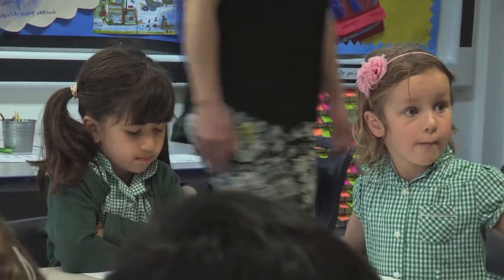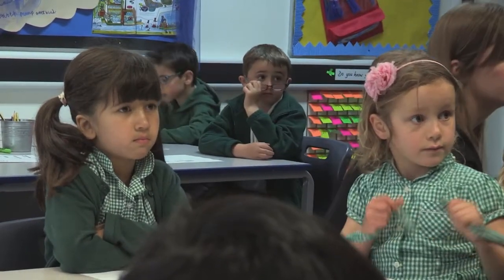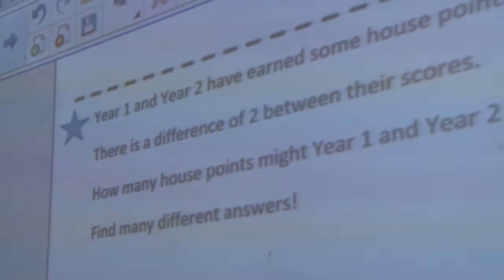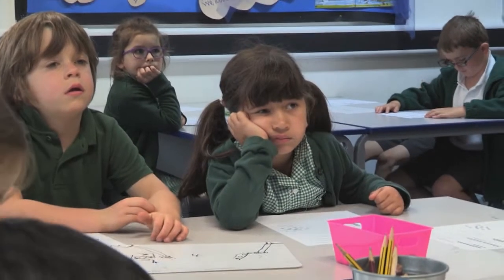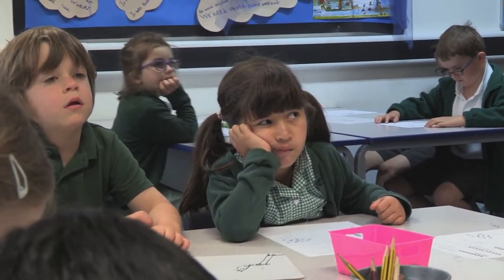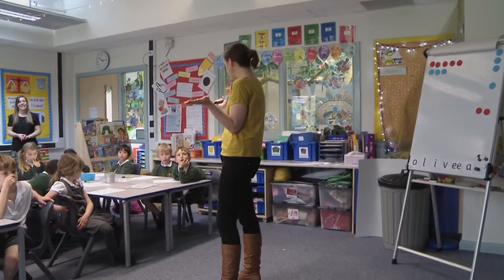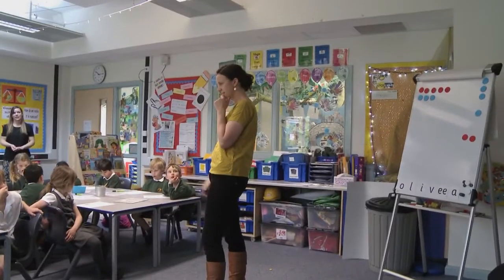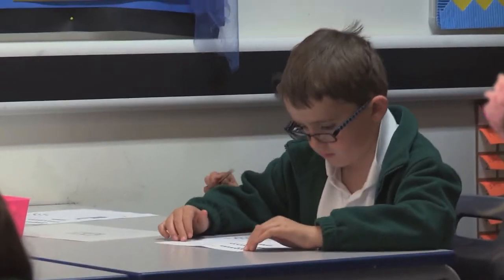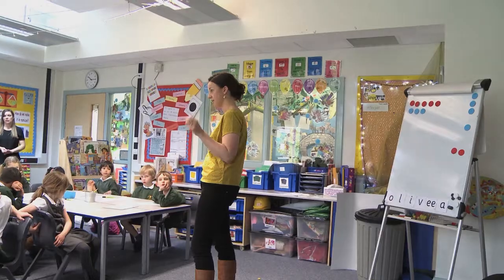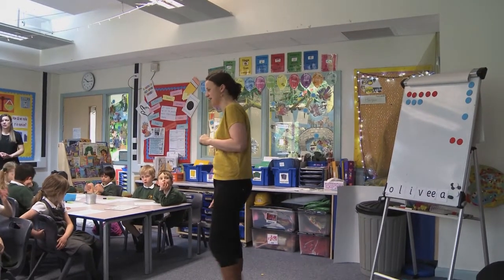There's a star challenge at the bottom if you finish that. The star challenge says: Year One and Year Two have earned some house points. There is a difference of two between the number of house points Year One have and the number Year Two have. So how many house points might Year One and Year Two have? There could be lots and lots of different answers.